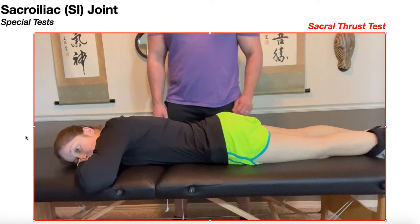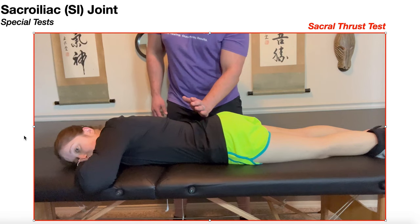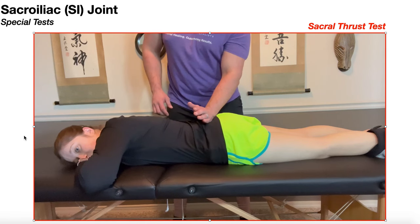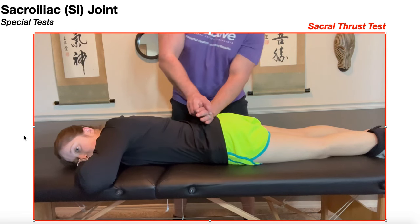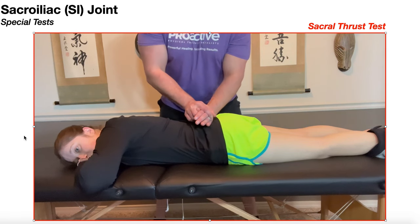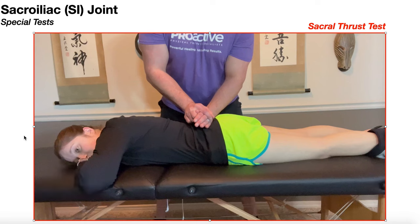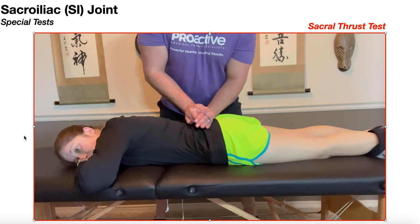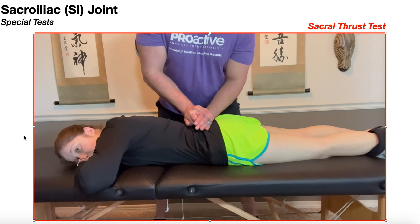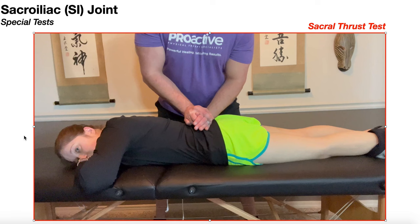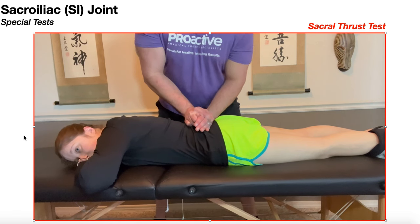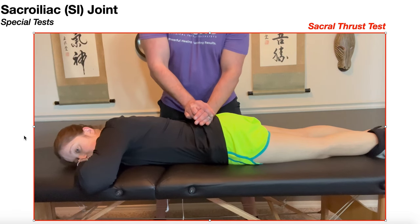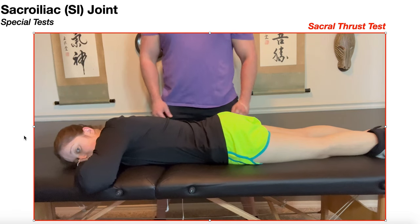To recap the sacral thrust test: performed in prone, S2 manual contact, three to six high velocity thrusts downward. A positive sacral thrust test is familiar pain provocation.